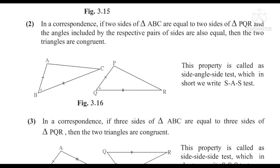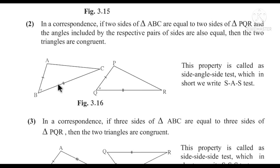Second test: In triangle ABC and triangle PQR, side AB ≅ side PQ, side BC ≅ side QR, and angle B ≅ angle Q. Corresponding two sides are congruent and the angle included by these two sides is also equal. Therefore, two triangles are congruent by the Side-Angle-Side test.